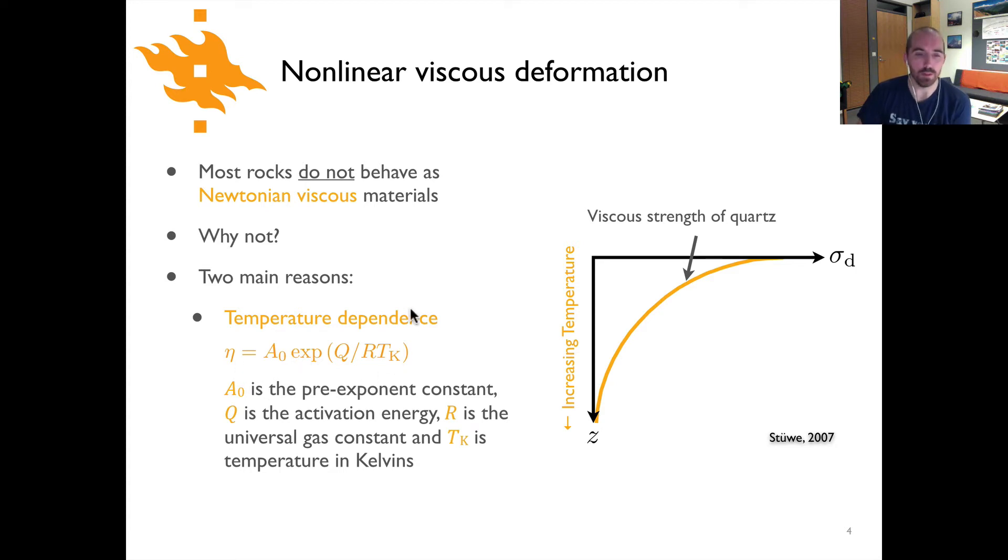Now mathematically that relationship is shown here where rock viscosity is shown to be a function of a₀ which is a pre-exponent constant that's a material property times an exponential function where the exponential includes the activation energy Q divided by the gas constant R and temperature T in kelvins. And so you can see it's this e to the something over temperature that gives you that exponential decrease in strength or exponential decrease in viscosity of rock with increasing temperatures.